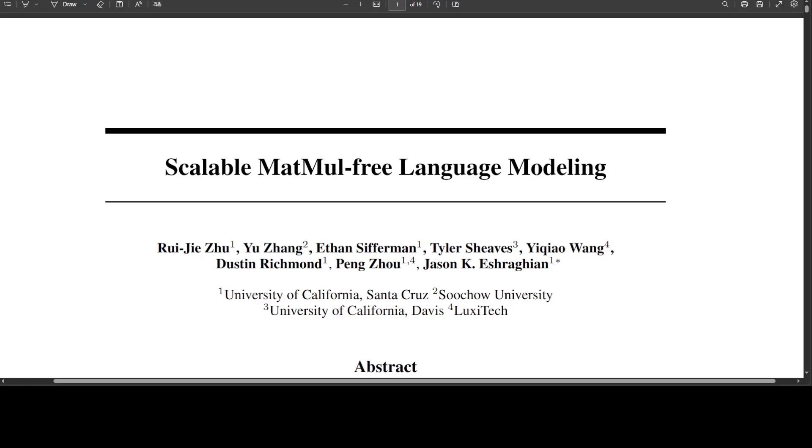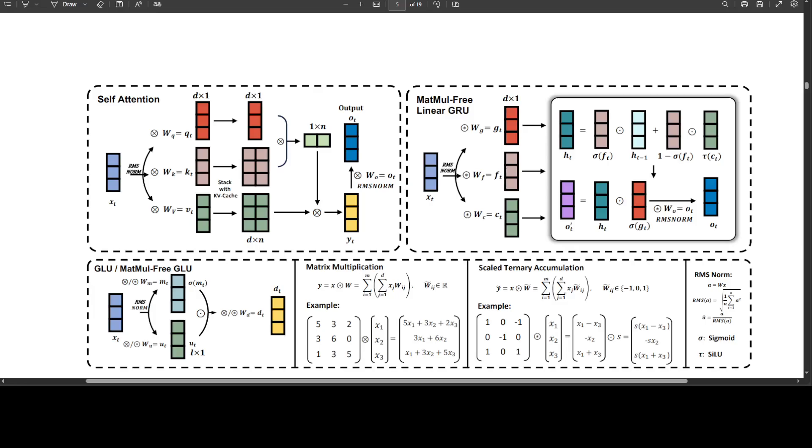Specifically, ternary weights eliminate MatMul in dense layers similar to BNNs. To remove MatMul from self-attention, they have optimized the GRU to rely solely on element-wise products and show that this model competes with state-of-the-art transformers while eliminating all MatMul operations.